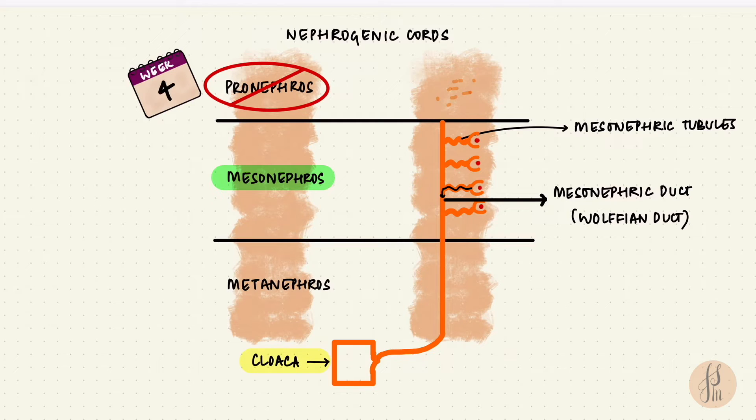So this stage can perform filtration. So it's functional. And it does the work of the kidneys until the final kidney takes over. So up to around 12 weeks. These tubules, they start degenerating as well, from the top down.